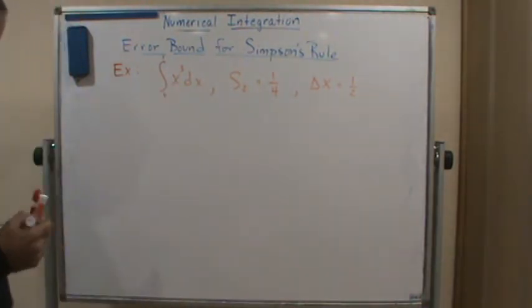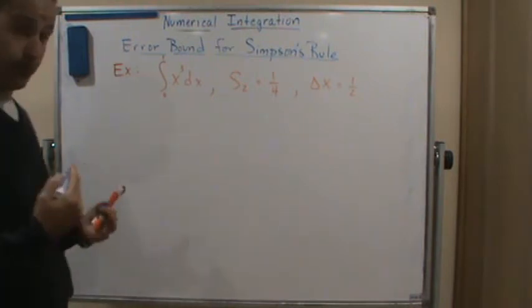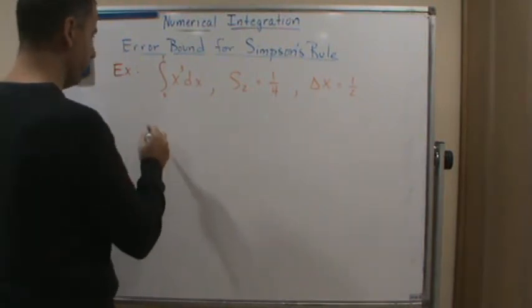So now what we're going to do is find what the upper bound is, but in order to do that, we need to find the fourth derivative.